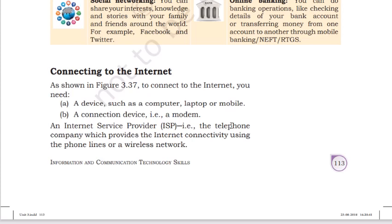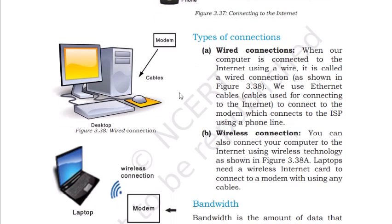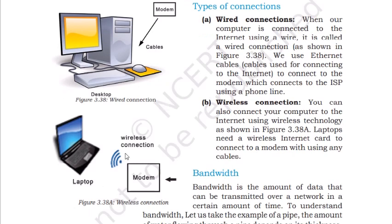To connect a device to the internet, you require a computer, laptop, or mobile, plus a connection device like a modem, internet service provider, or telephone company that provides internet connectivity using a phone line or wireless network. A wired connection means the computer is connected to the internet using a wire. A wireless connection means connecting without any wires.